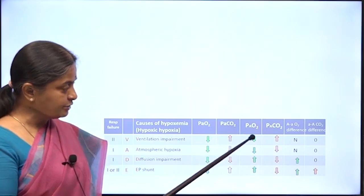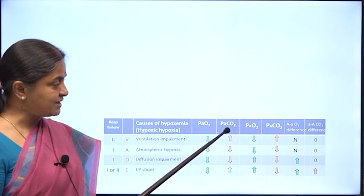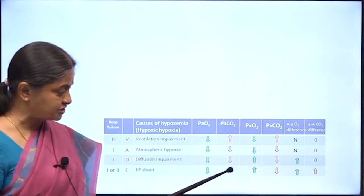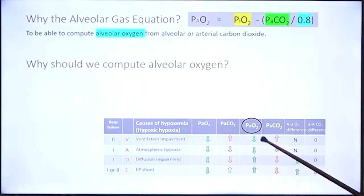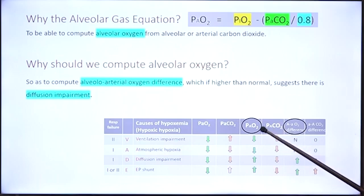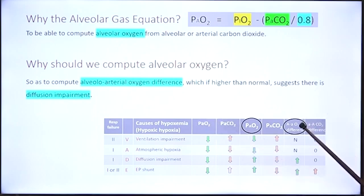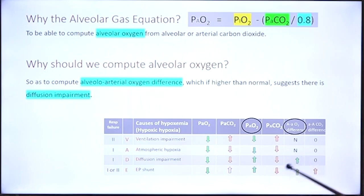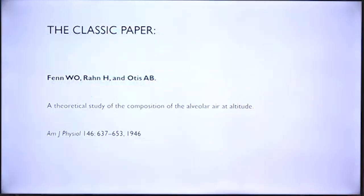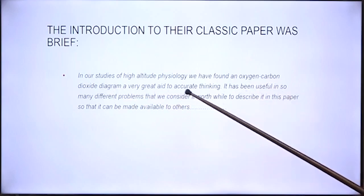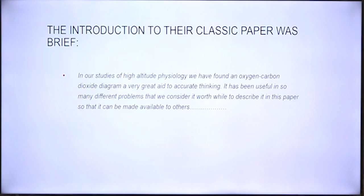This is indeed the role of the alveolar gas equation: it allows you to calculate alveolar oxygen if you can estimate alveolar carbon dioxide, or at least arterial carbon dioxide, since these two are equal in most situations except extrapulmonary shunt. Why should we compute alveolar oxygen? If we know arterial oxygen, we can calculate the alveolar-arterial oxygen difference, which is a lung function test. If it is increased beyond normal values, we know there is a diffusion impairment. This is the classic paper from Professor Fenn, in which they not only describe the alveolar gas equation but also note that they found an oxygen-carbon dioxide diagram to be a very great aid to accurate thinking.